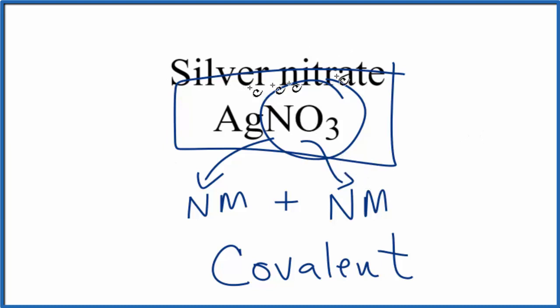So in answer to our question whether silver nitrate is ionic or covalent, the compound's ionic, but we do have covalent bonds within the nitrate polyatomic ion. This is Dr. B. Thanks for watching.